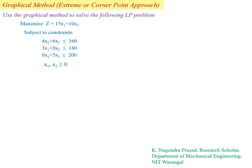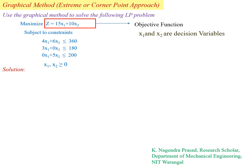The objective function is maximize Z equal to 15x1 plus 10x2, where x1 and x2 are the decision variables. The three constraints are: 4x1 plus 6x2 ≤ 360; 3x1 plus 0x2 ≤ 180; 0x1 plus 5x2 ≤ 200; and x1, x2 ≥ 0, which are the non-negativity constraints.